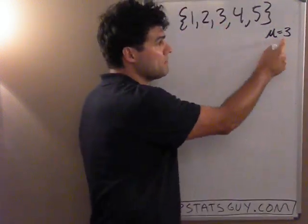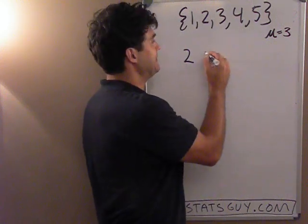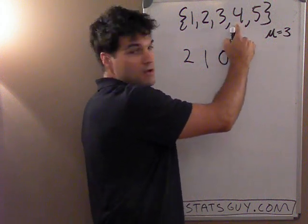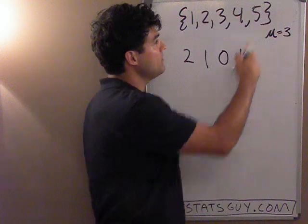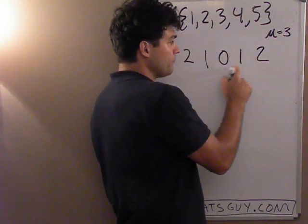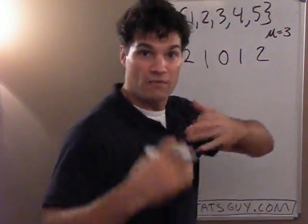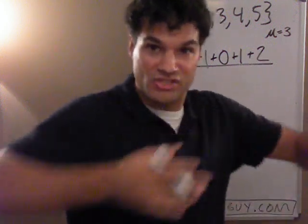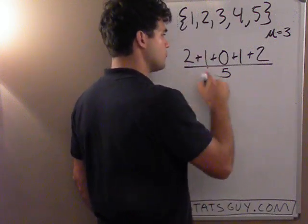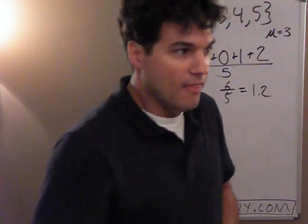So: 1 is 2 away, 2 is 1 away, 3 is the mean so it's 0 away, 4 is the same distance as 2, and 5 is 2 away. These are all the individual distances to the mean. So if I want the average distance to the mean, it's the average of all those individual distances. 2 plus 1 plus 0 plus 1 plus 2, divided by 5 — that's 6 over 5, which is 1.2. So on average, they're all 1.2 away from the mean.